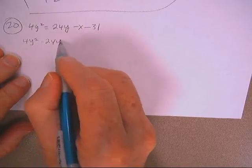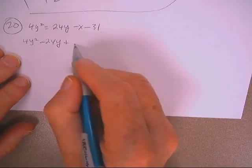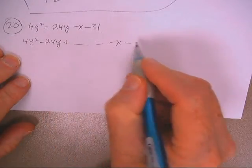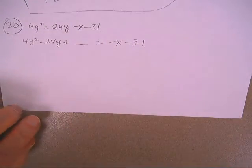Subtract 24 from both sides, and go ahead and put a blank. And let's just leave this other stuff over here for the time being.